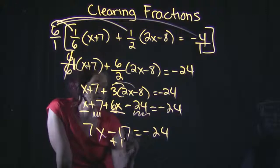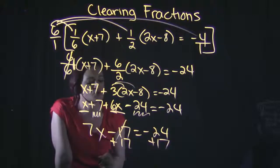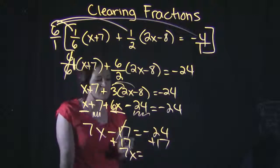Since I have the variable on the left-hand side, I want to move my numbers to the right-hand side. So I'm going to add 17 to both sides.